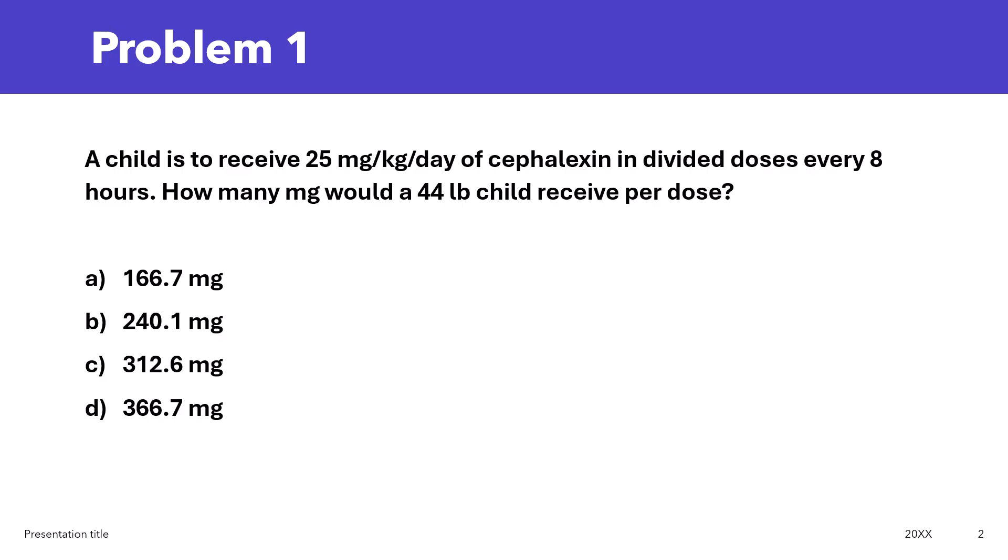Let's look at this first problem together. A child is to receive 25 mg per kg per day of cefalexin in divided doses every 8 hours. How many mg would a 44-pound child receive per dose? Is it A, B, C, or D?